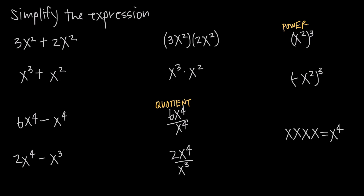In this video we're going to be talking about all of the basic rules of exponents. When we're talking about exponents, we can have an exponent like x to the fourth, where x is the base and 4 is the exponent — this small number in the upper right-hand corner. It means we're going to multiply x by itself 4 times, or we have 4 factors of x multiplied together. So if we expand this out, it's x times x times x times x. If we collapse it, it's x to the fourth. So what happens when we do addition, subtraction, multiplication, and division of exponents?